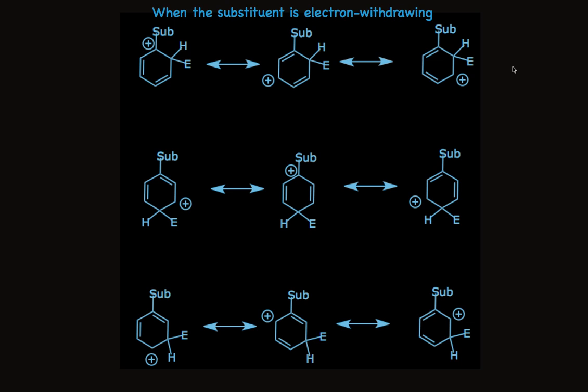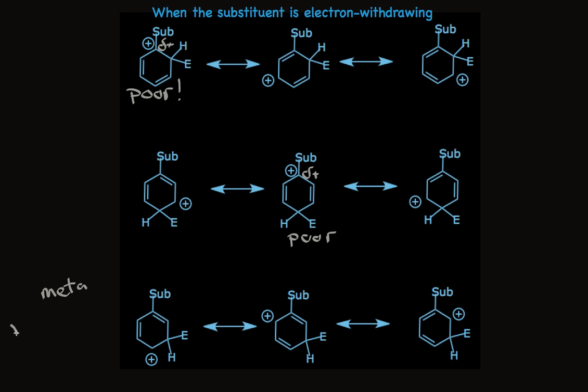When the substituent is electron-withdrawing, there's already a partial positive charge on the substituted carbon, so a resonance structure that also puts positive charge on that carbon is not very stable and contributes little to stabilization. This is true for both ortho and para substitution. For meta substitution, because there's never a positive charge on the carbon bearing the substituent, the electron-withdrawing nature doesn't matter as much, and all resonance structures are stabilizing. The meta product is therefore formed faster.